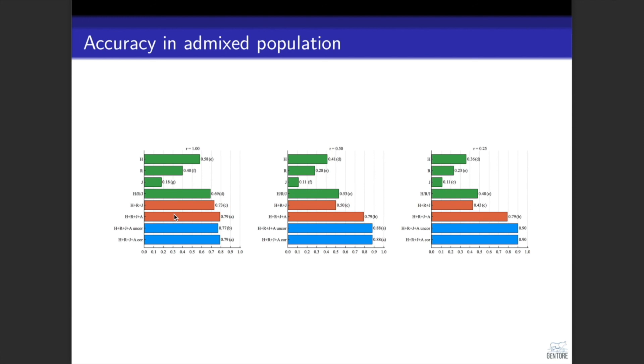When we added data from admixed individuals as if it's a different breed, accuracy improved. And it makes sense because here we consider admixed population as a different breed. This scenario is more like doing multi-breed prediction without including the target breed in the reference population. But here we add the target breed itself in the reference population, so the accuracies improve. Accuracy also improved when we considered breed origin of alleles, and it was in some cases as high as 10 percentage points.